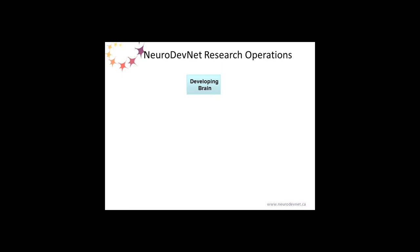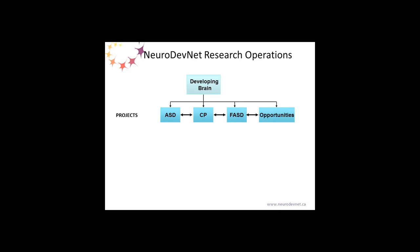The focus of NeuroDevNet is understanding the developing brain and what can go wrong during brain development. The initial projects selected focused on three major disorders: autism spectrum disorder, cerebral palsy, and fetal alcohol spectrum disorder. These are the three main disorders we study, but we also have an opportunities initiative that runs in parallel, which has generated some very exciting and innovative research, particularly around the areas of interventions.